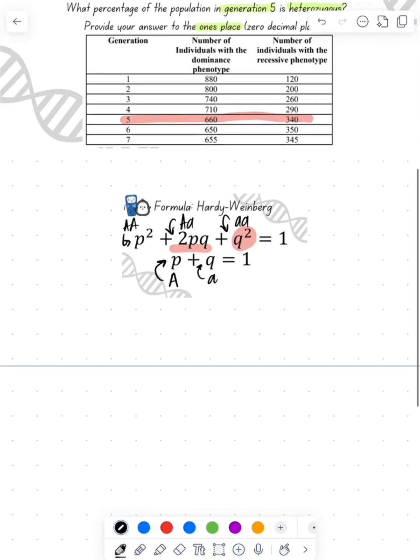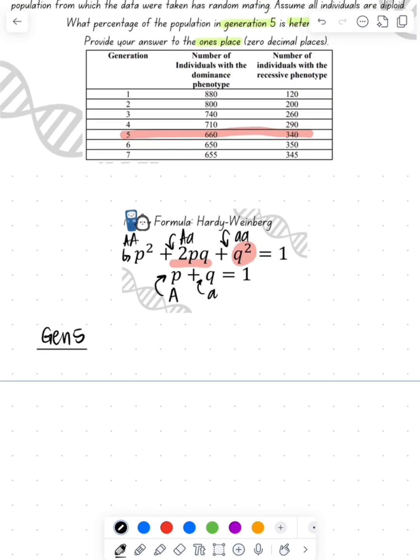So if we're going to solve for generation 5, we need to figure out what's Q squared. We're going to take the number that we have, which is 340, over the total, and total is 660 plus 340, because that's the dominant and the recessive together. That's going to give us a Q squared of 0.34.